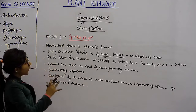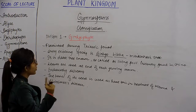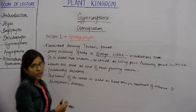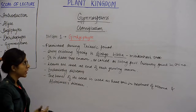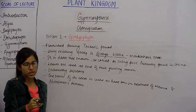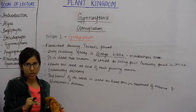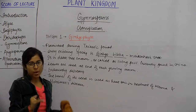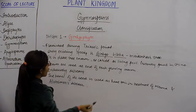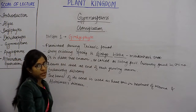When we talk about the Ginkgophyta division, we are essentially talking about just one tree, which is Ginkgo biloba, commonly called the maidenhair tree. The Ginkgophyta were among the first Gymnosperms and have mostly gone extinct. Now only one instance remains, which is Ginkgo biloba, which flourished during the Triassic period.